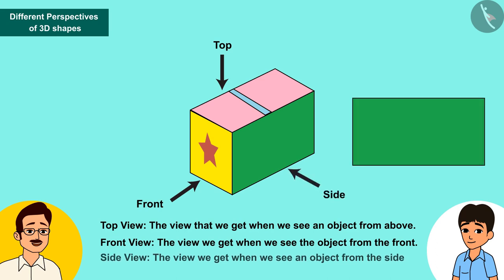The view that we obtain when we see the object from the side is called side view.